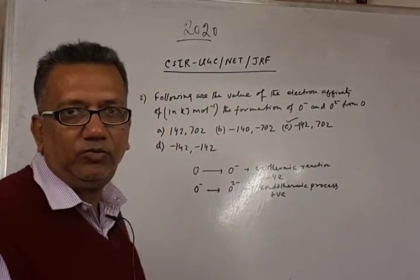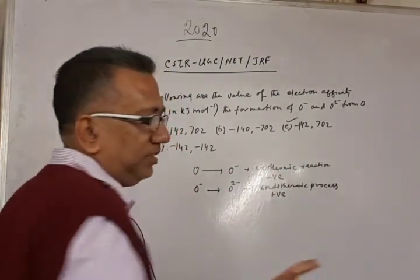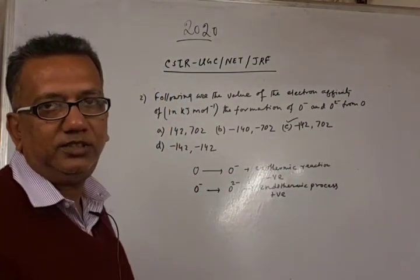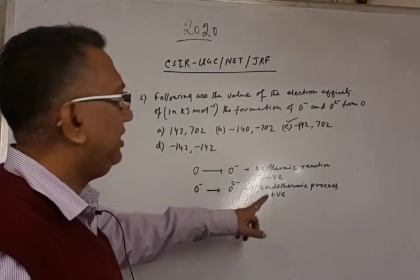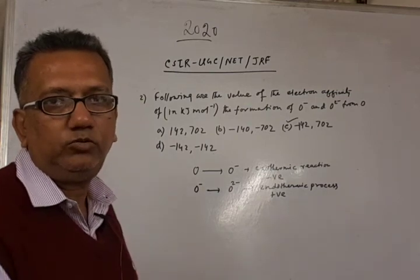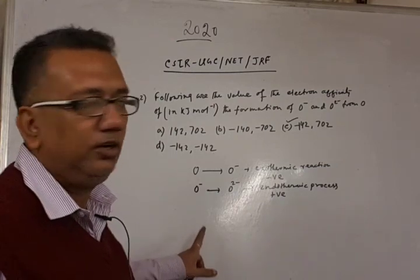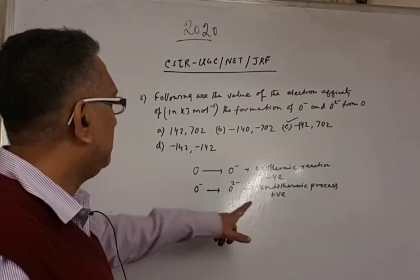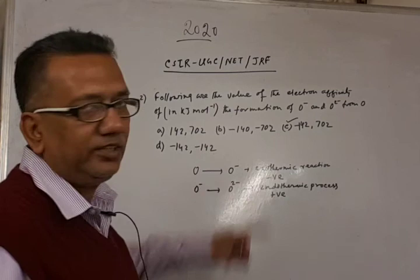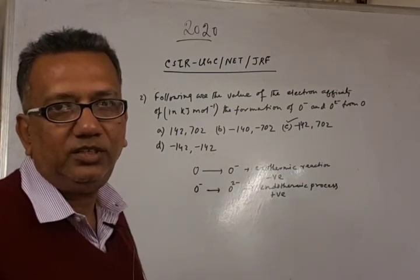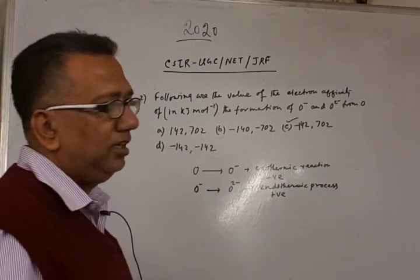So the correct option will be C. In the first case it is 142 kilojoule per mole, this much of energy is released due to electron affinity, but in the second case when electron is interacting with another negative charge oxygen, then we need extra energy to force the electron to sit inside the orbital of this oxygen atom. So this process is endothermic process, we need energy, and the first process is an exothermic process where we are getting the energy back. So C is the correct option.